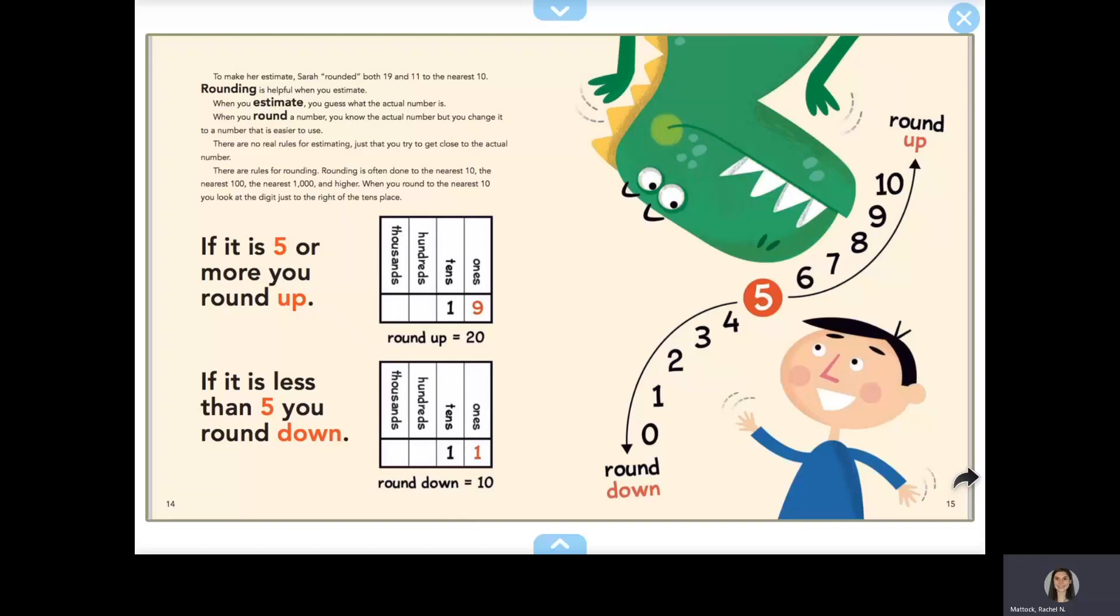Rounding is often done to the nearest 10, the nearest 100, the nearest 1000, and higher. When you round to the nearest 10, you look at the digit just to the right of the tens place. If it is 5 or more, you round up. If it is less than 5, you round down.